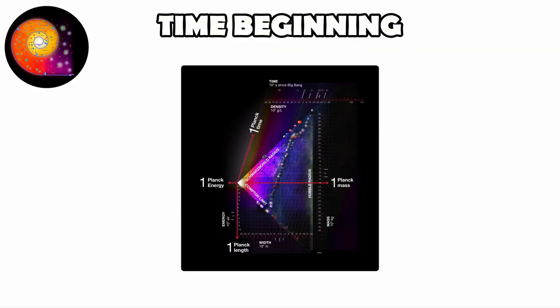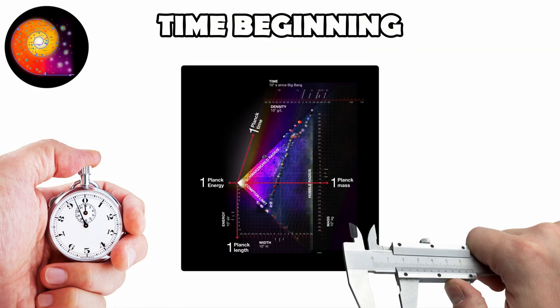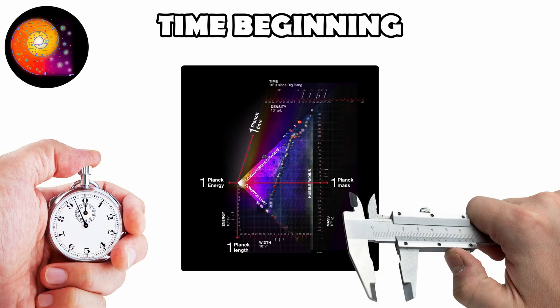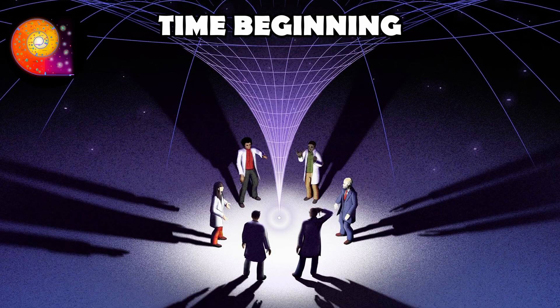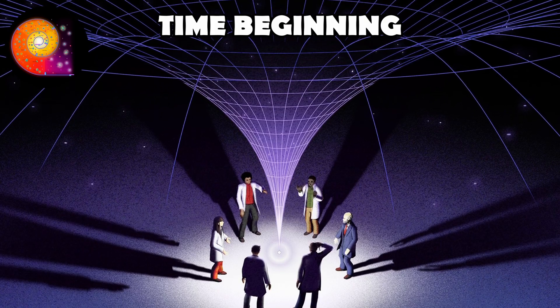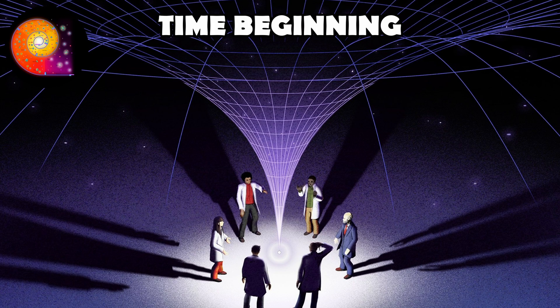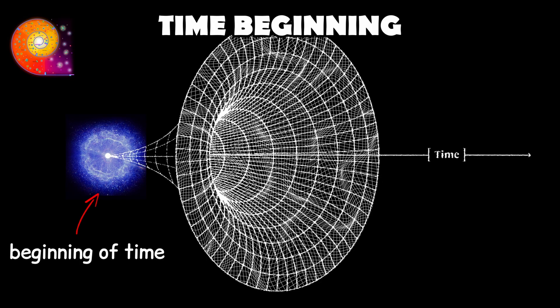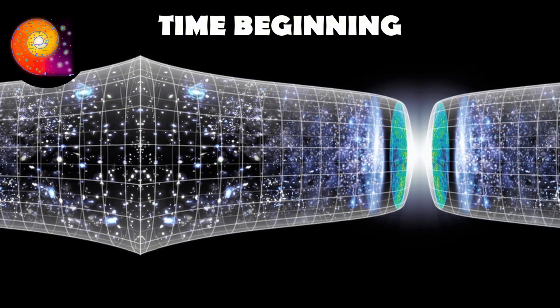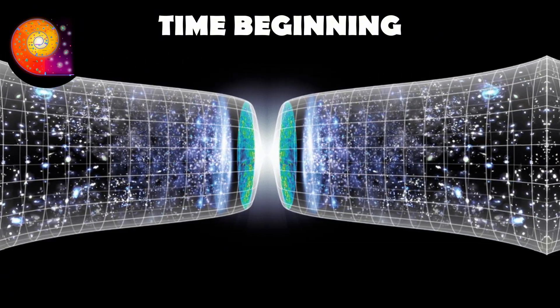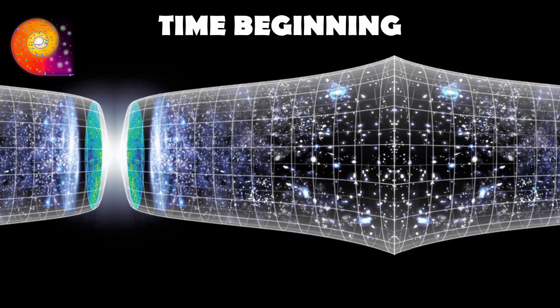What we know is that time, as measured by clocks and physical processes, emerges clearly only after the Planck time. Before that, we lack the tools to say whether time existed or what its nature might have been. So while it is possible the Big Bang marked the very beginning of time, it is equally possible that time has a deeper story, with chapters that extend beyond the reach of our current physics.